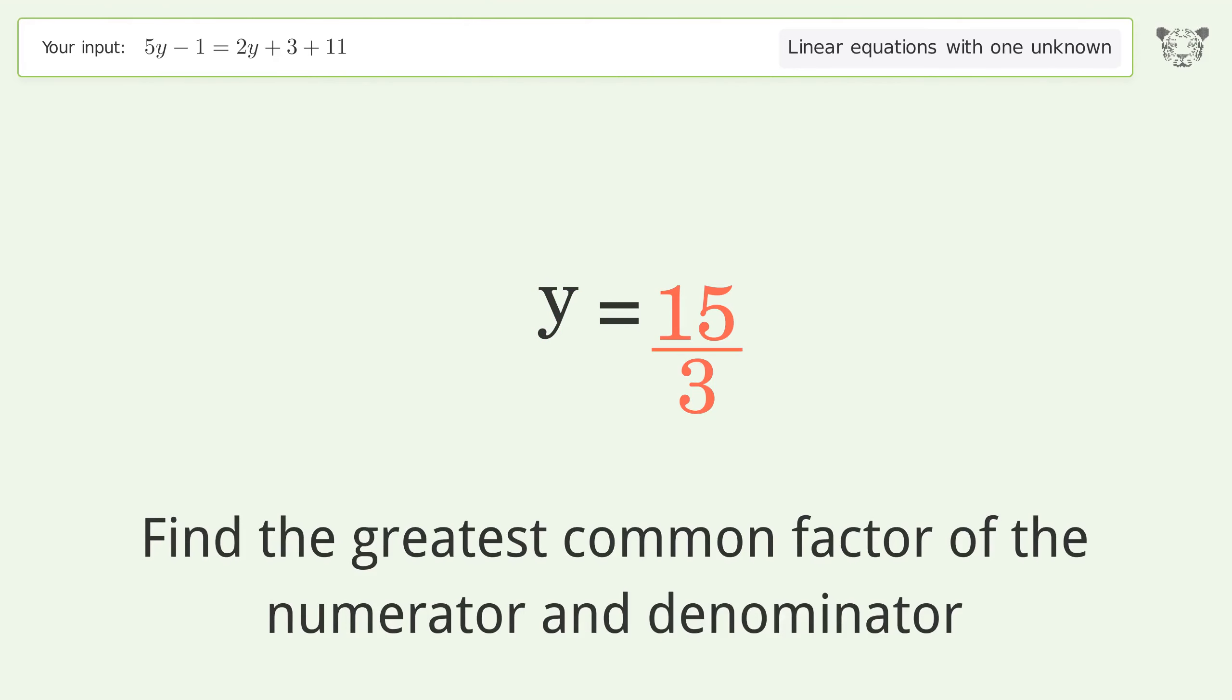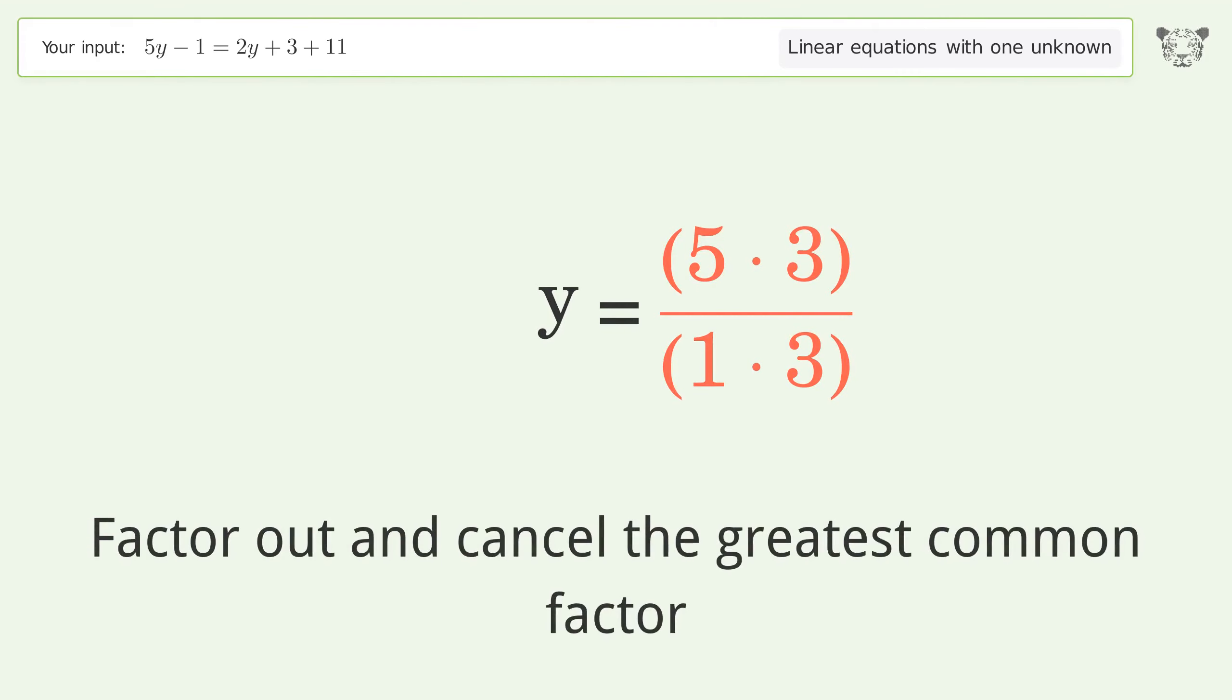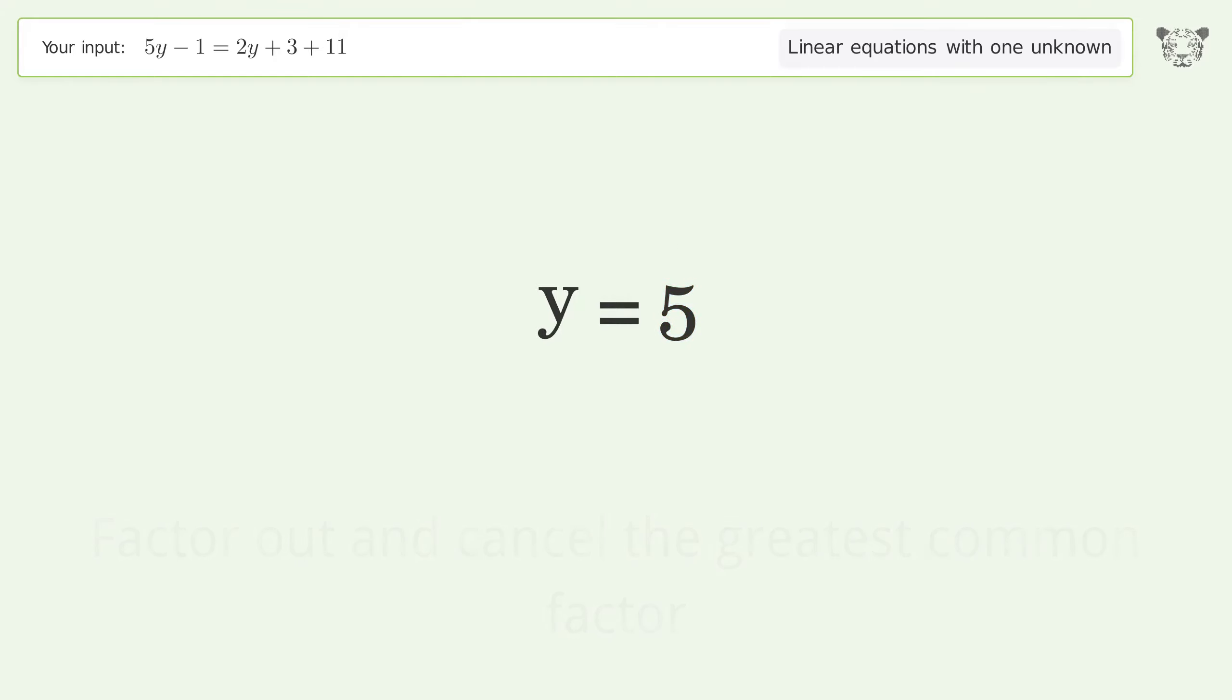Find the greatest common factor of the numerator and denominator. Factor out and cancel the greatest common factor, and so the final result is y equals 5.